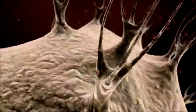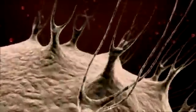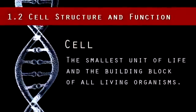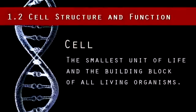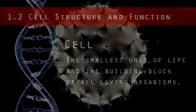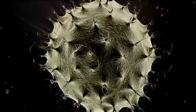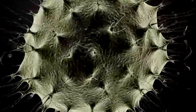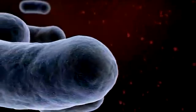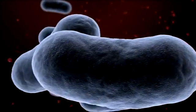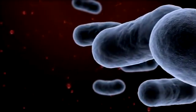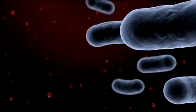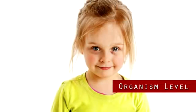Understanding what makes up a cell and how the cell works is fundamental to all of the biological sciences. A cell is the smallest unit of life and the building block of all living organisms. Appreciating the similarities and differences between cell types within and among organisms is particularly important to the fields of cell biology and molecular biology. Molecular biology can be confusing because it is a subject that focuses on things so small you cannot even see them. So let's begin with big organisms and work down to the molecular level.